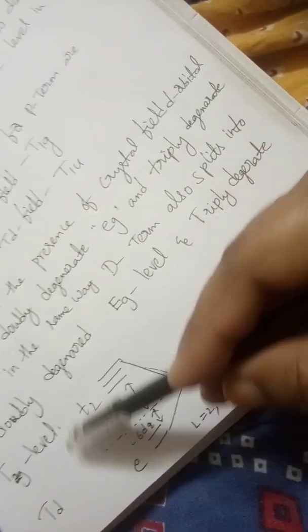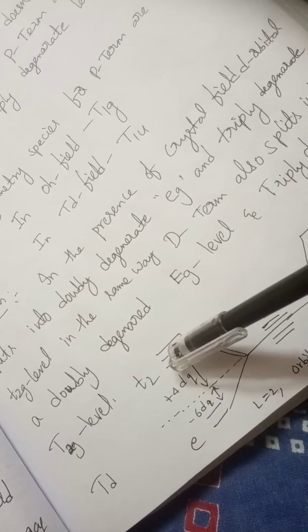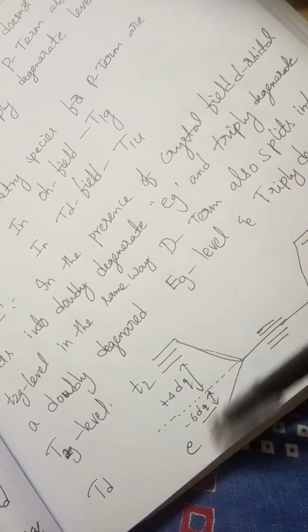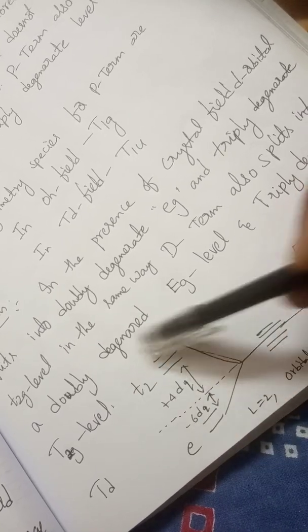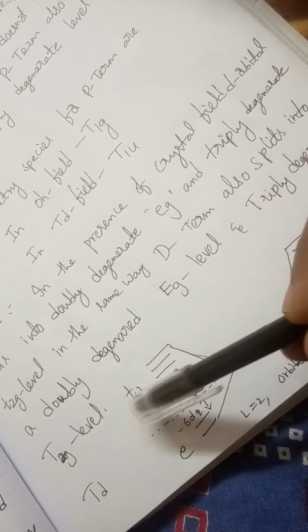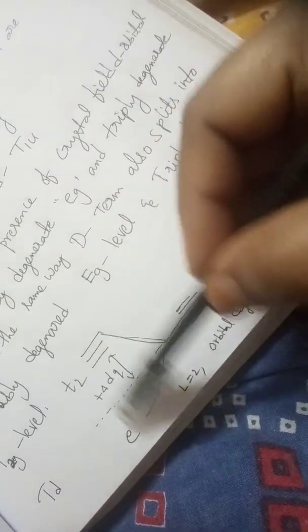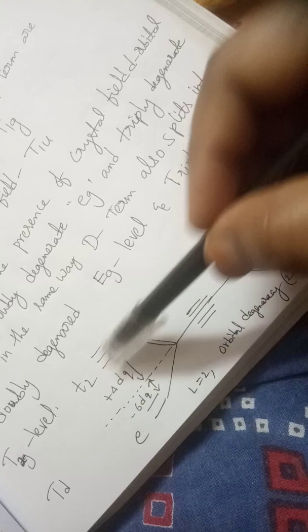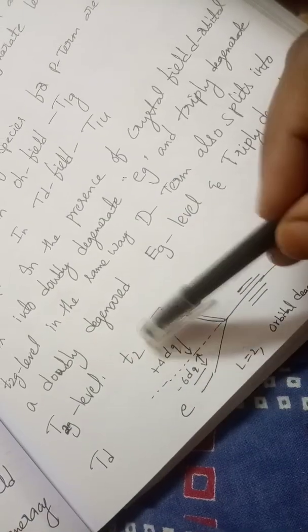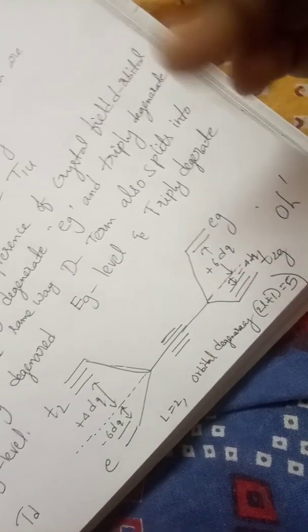In a tetrahedral field, all ligands are positioned between the axes. So the T2g orbitals, whose lobes are between axes, go to the higher energy level compared with the Eg level. Tetrahedral does not have symmetrical structure, so we do not write 'g' — it is ungerade. For the D orbital, L equals 2, and the degeneracy is 2L+1 = 5.